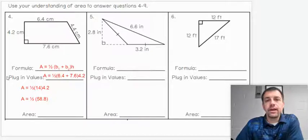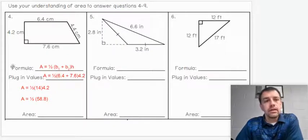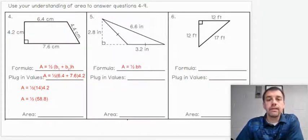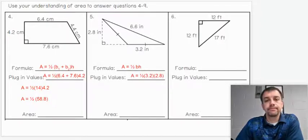Alright, let's move on to number 5. Is number 5 a trapezoid? Hopefully you're saying no. You'd be correct if you said no. This is a triangle. So we're going to use a different formula. Area equals one-half base times height, where 3.2 is our base and 2.8 is our height, meaning we don't need this measurement of 6.6.